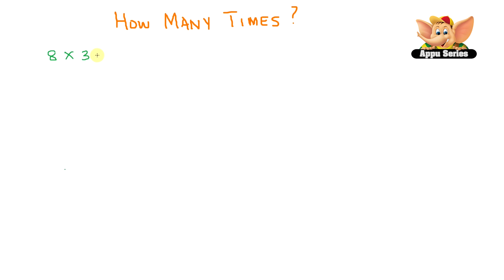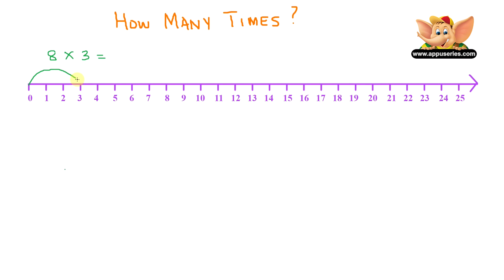For example, if you have 8 times 3, starting from 0, you would jump the number line by 3 numbers 8 times. So here we go. There's 1, 1 jump, 2, 3, 4, 5, 6, 7, 8. So when you jump 8 times, you will see that the answer is 24.